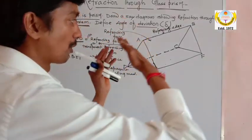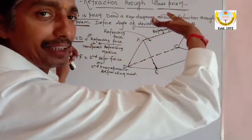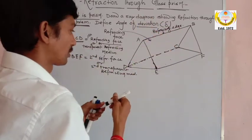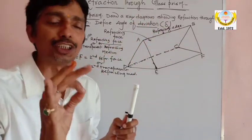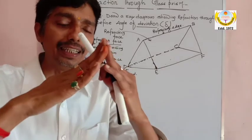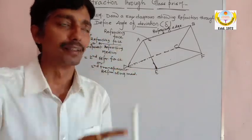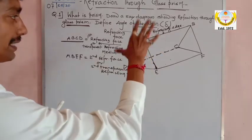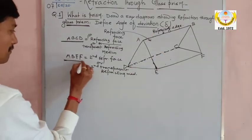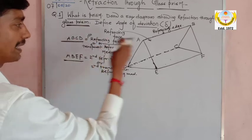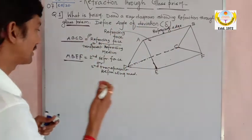Now that we have drawn the actual prism in 3D, this shape is called a wedge-shaped prism. In this 3D view, ABEF is the second refracting face, ABCD is the first refracting face. I have drawn it in 3D view.